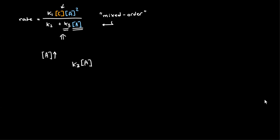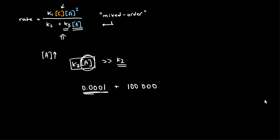It doesn't really matter where they came from or what they pertain to. The big understanding is just how to apply this equation as the reaction progresses. So K3A in the denominator is going to be a lot larger than K2 because we have a very high concentration of A at the beginning of the reaction. So K2 becomes negligible — it's the same logic as if you were adding 0.0001 to 100,000. This is pretty much negligible; it's not going to do too much to this number, so we can pretend it doesn't exist.